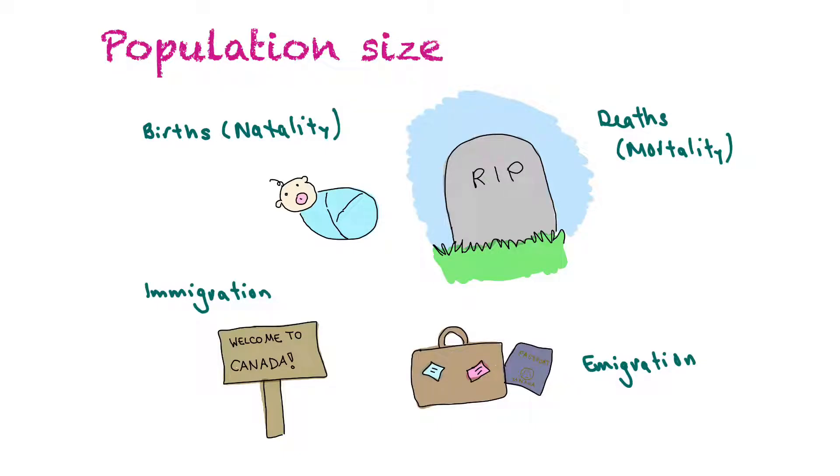Population size is impacted by four factors. One of them is births, how many births are in the area. That's also known as natality. Also the number of deaths or the mortality. The immigration, the organisms moving into an area. And then finally emigration, the organisms moving out of an area.